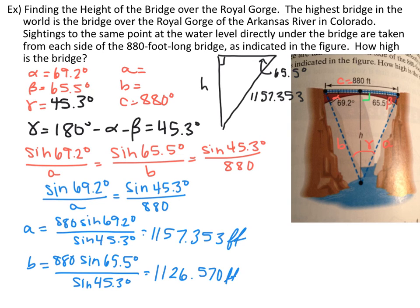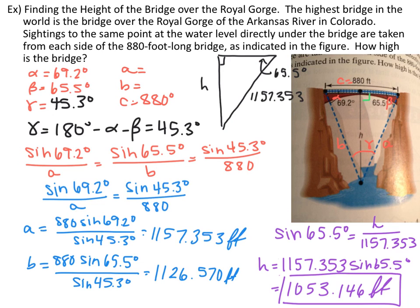Using side A and the right triangle on that side: we have a right triangle, we don't know the height, we know the angle is 65.5 degrees, and we just found the hypotenuse is 1,157.353 feet. Using SOHCAHTOA, sine of 65.5 degrees equals the opposite side H over the hypotenuse 1,157.353. Solving, the height of the bridge above the river is 1,053.146 feet.